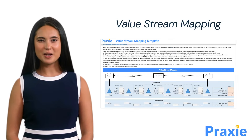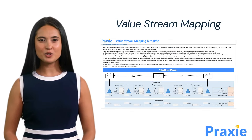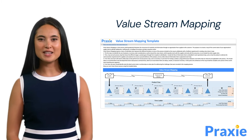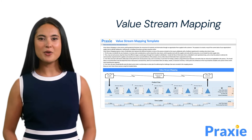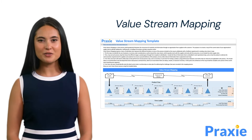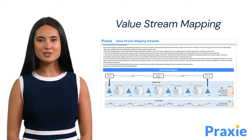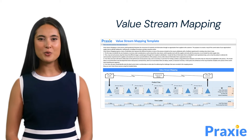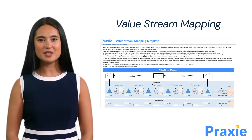Value stream mapping is a tool used to visualize and analyze the flow of materials and information in processes. It helps identify areas for improvement and waste reduction, facilitating continuous improvement efforts.